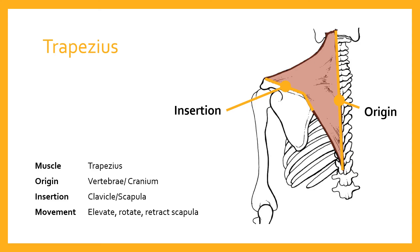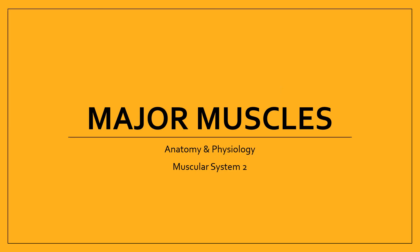So we've looked at the major muscles of the human body — not all of them, but a fair few — and we've talked about how we explain where a muscle begins and ends using technical language like origin, insertion, proximal, and distal. I hope that's been helpful. Thanks for watching.